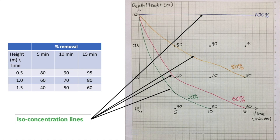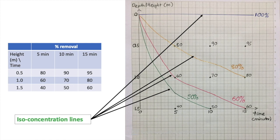You can draw as many isoconcentration lines as you want — do not just draw one, as that is not enough. Two or three lines is better, and if you are ambitious you can draw a 90 percent line too. However, the more lines you draw, the longer the calculation will be in exams. Three to four lines, including the 100 percent line, will be sufficient.